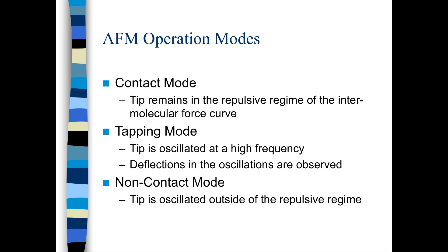There are three modes of operation in the atomic force microscope. The first is contact mode, in which the tip is almost placed on the material and is run throughout the surface of the material, thus imaging it. The tip remains in a repulsive regime of the intermolecular force curve.